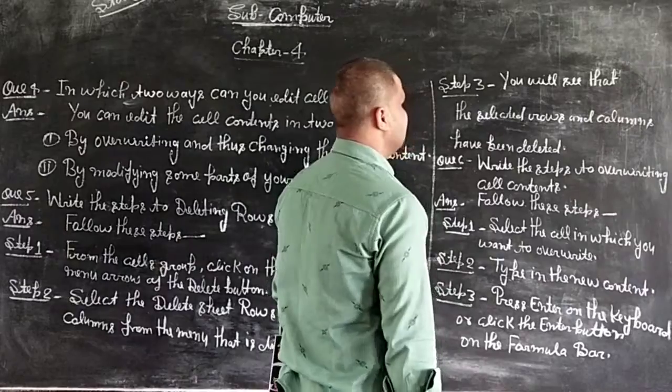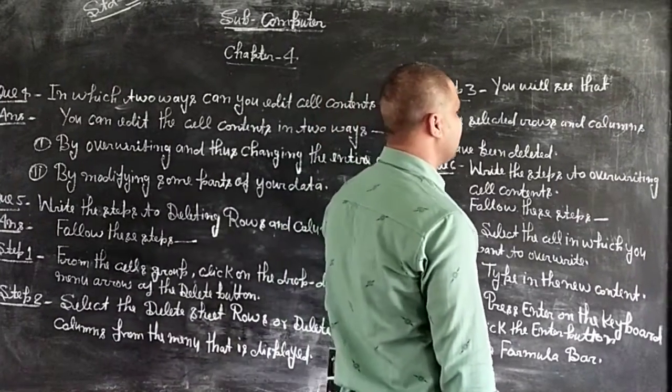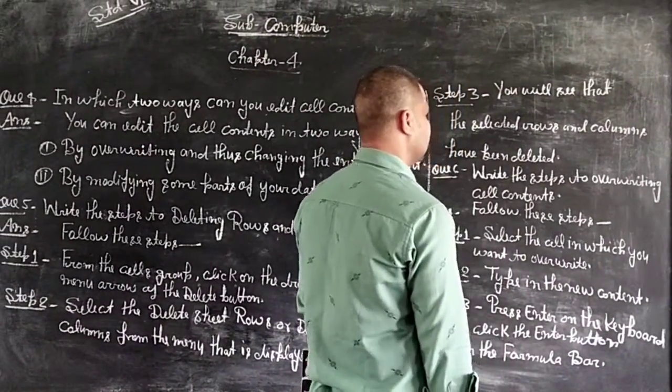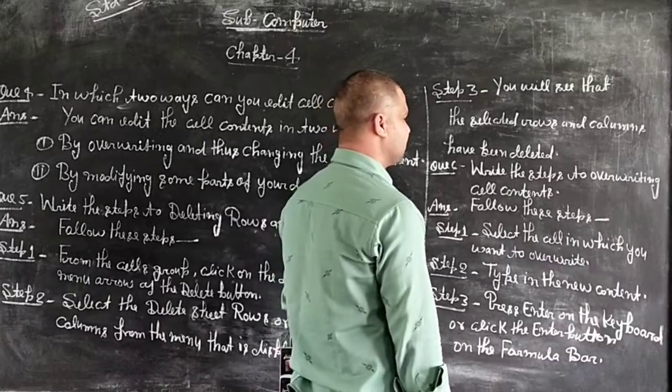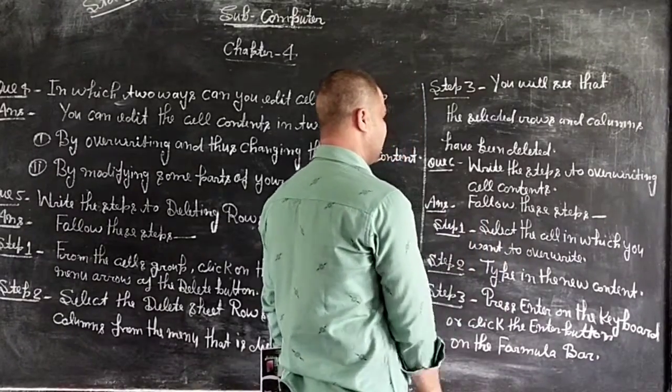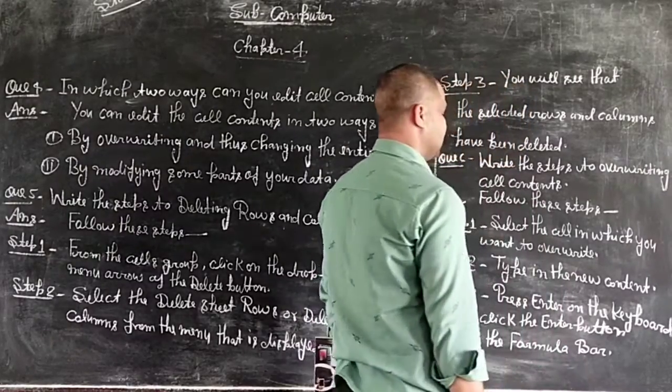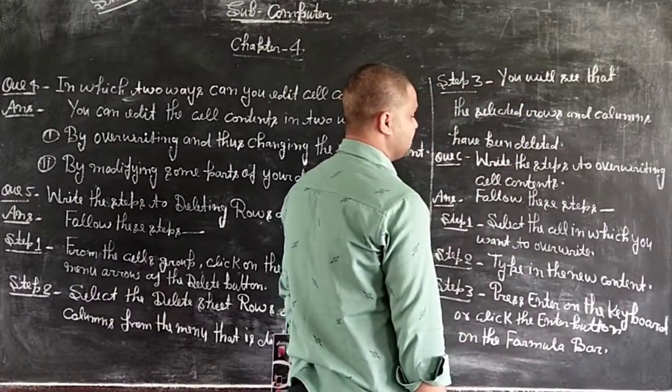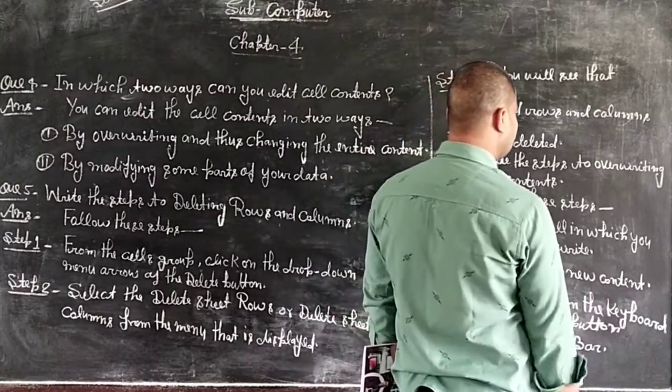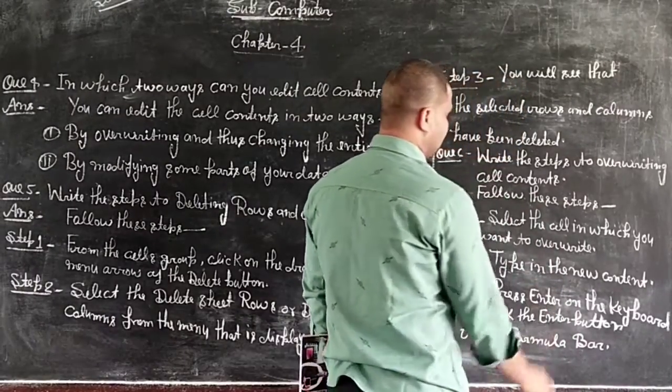Write the steps to override the cell content. Follow these steps: Select the cell in which you want to override. Type the new content. Type the enter key on the keyboard or click the enter button on the formula bar.